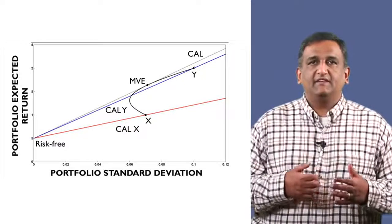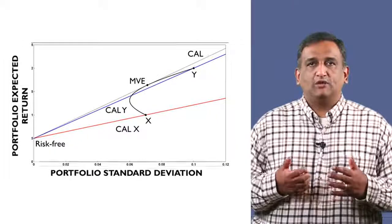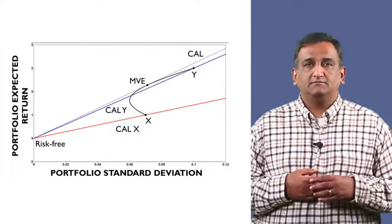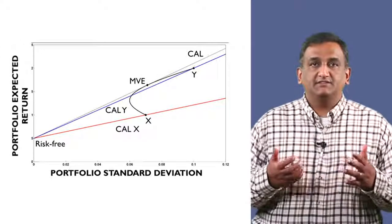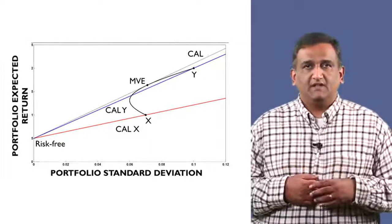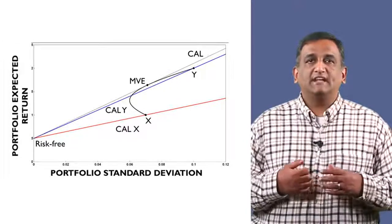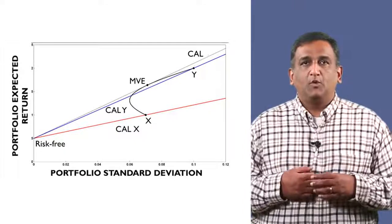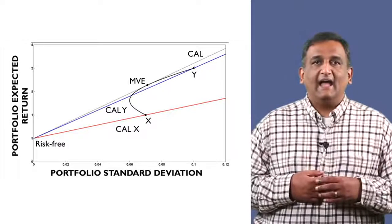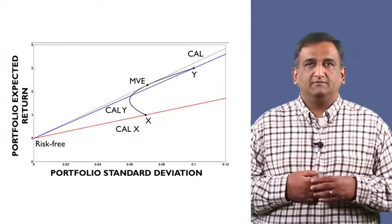We could form a portfolio with X and the risk-free asset — all combinations of these two lie on the red capital allocation line. Can we do better than this in terms of risk and return? The answer is yes. Remember non-satiation: we can always get higher utility by moving towards the top left. A portfolio of Y and the risk-free asset gives a blue line with a steeper capital allocation line, which means higher utility.